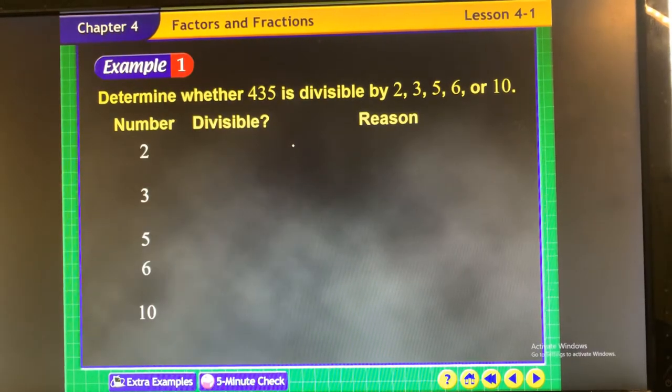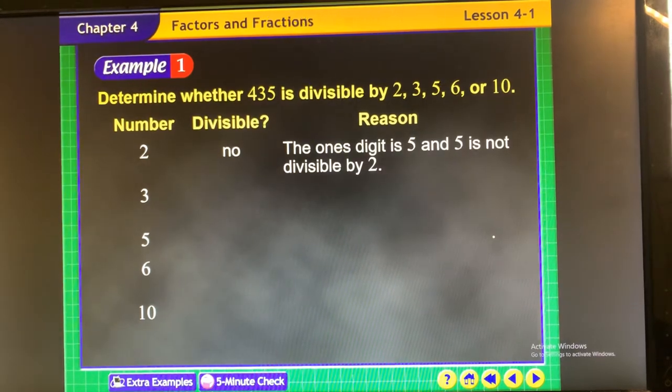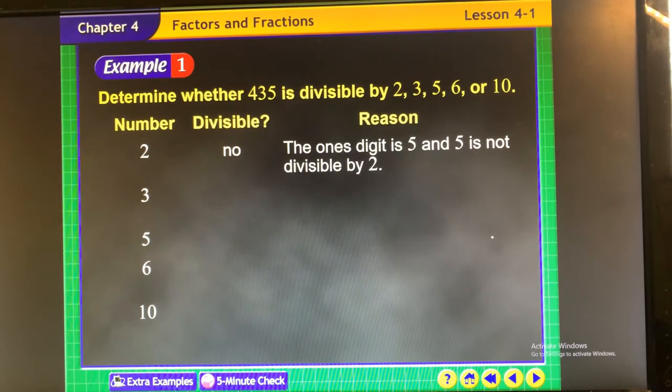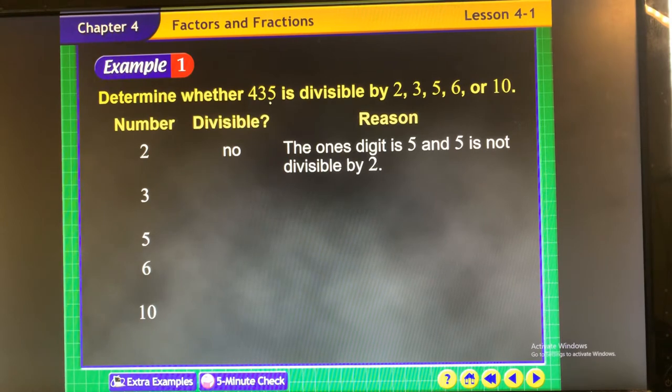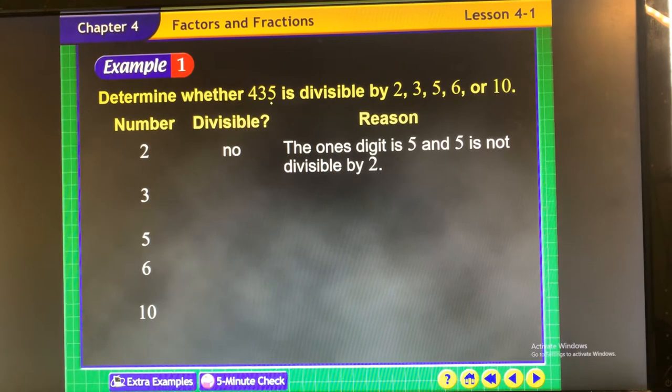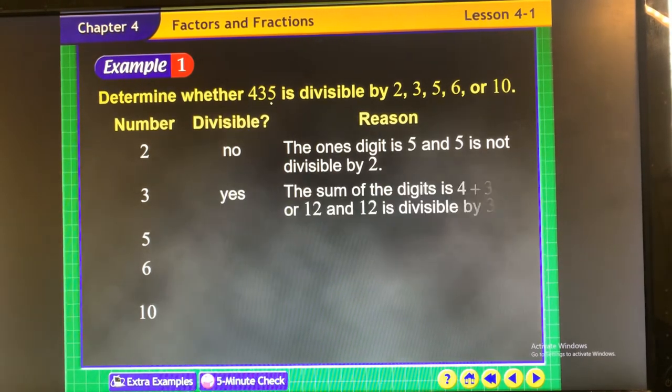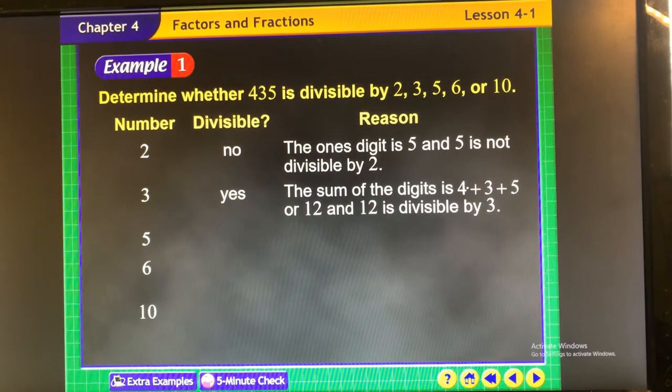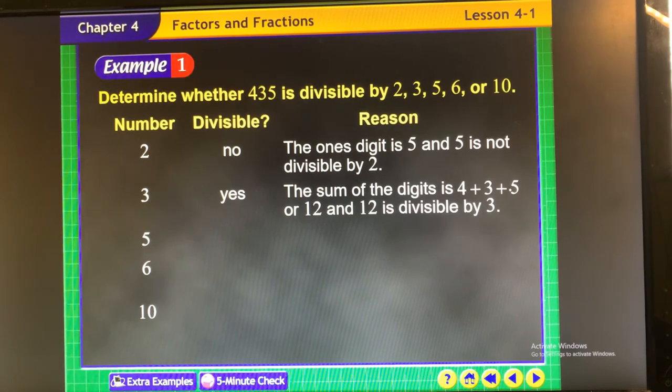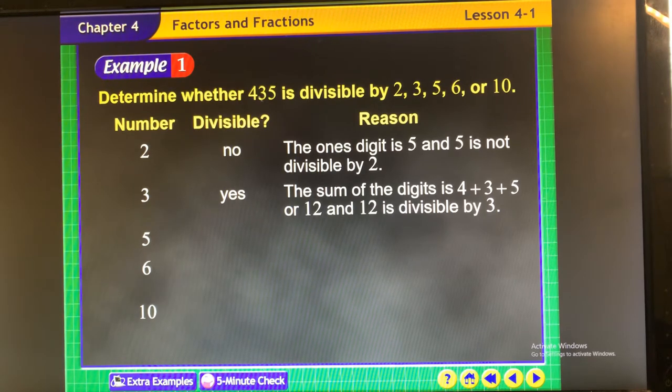So let's look at this number, 435. Is it divisible by 2? Nope, because the ones digit is not divisible by 2. So remember, this digit right here would have to be divisible. Is it divisible by 3? Yes, because if you add the digits together, you get a sum of 12, and 3 goes into 12, so 3 goes into this whole number.